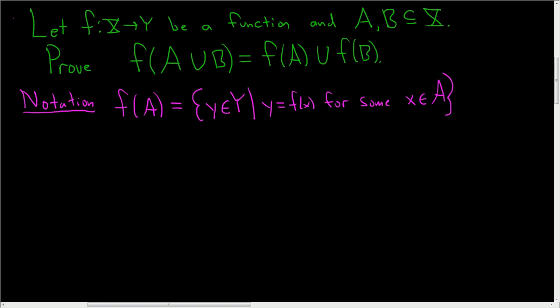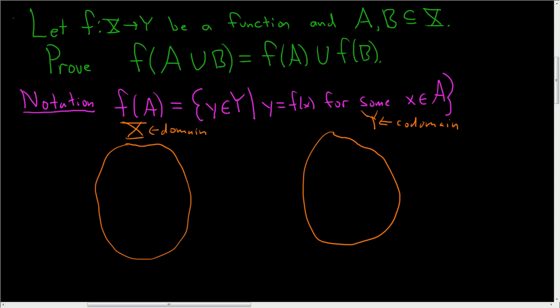So what does this mean graphically? Let's draw a quick picture before we begin the proof. So if this is capital X, this is your domain. And then over here we'll have capital Y. This is your codomain. Then let's say that this yellow blob here, or yellow circle, let's say that's A.